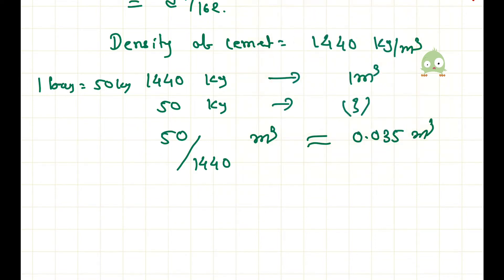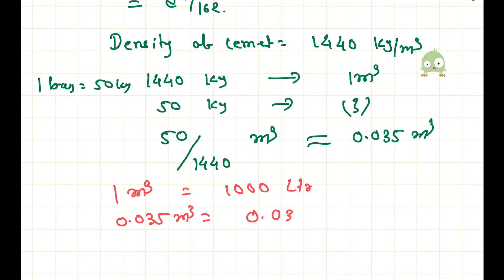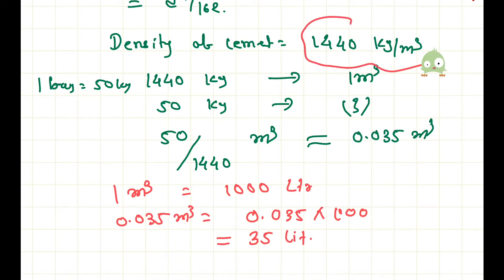We know that 1 meter cube equals 1000 litres. So 0.035 meter cube equals 0.035 multiplied by 1000, which equals 35 litres.